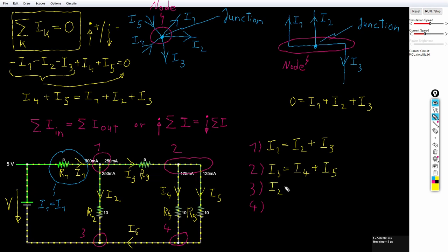For the third node, we have i6 plus i2 equals i1. For the fourth node, we have i4 plus i5 equals i6.